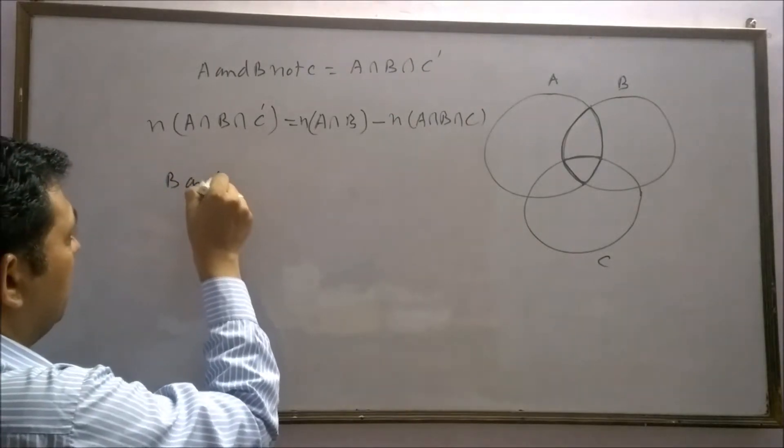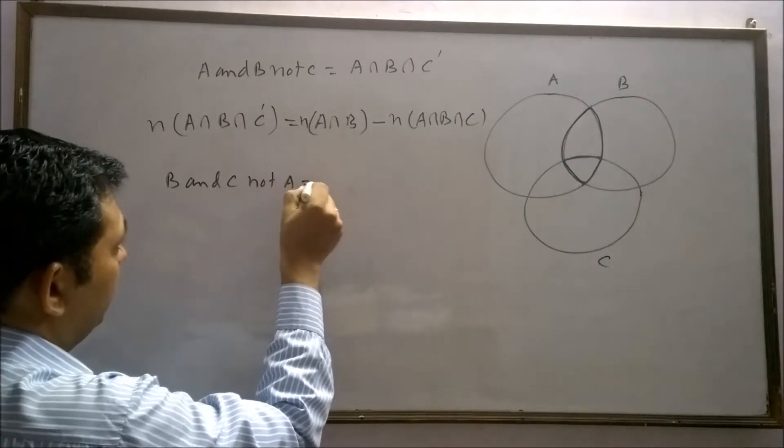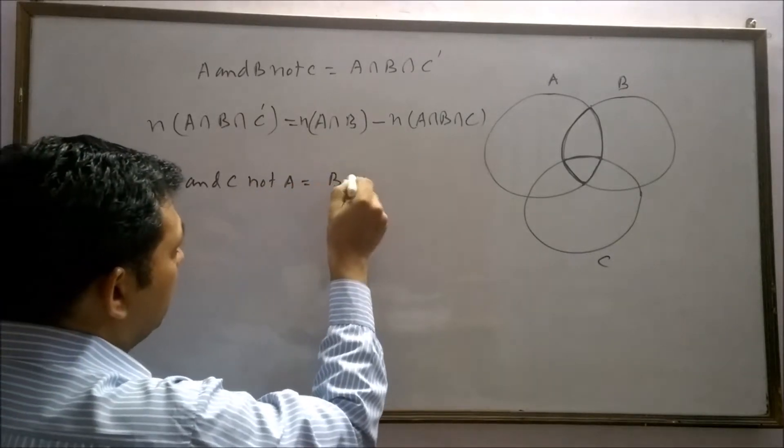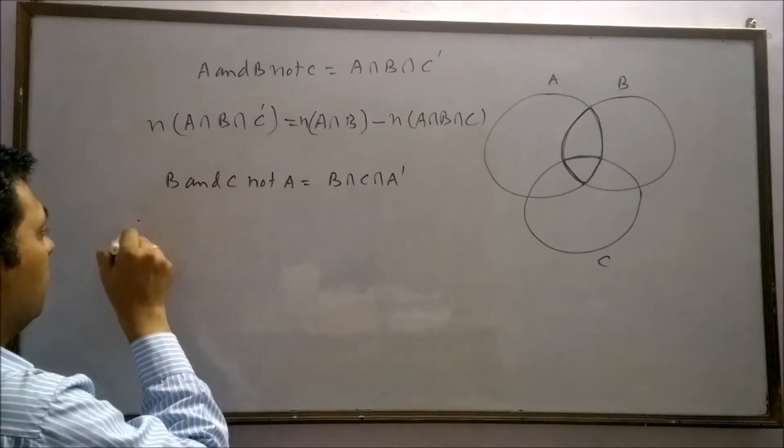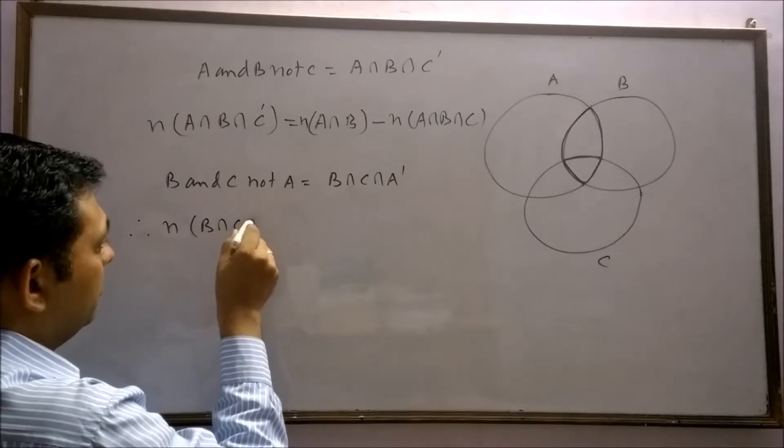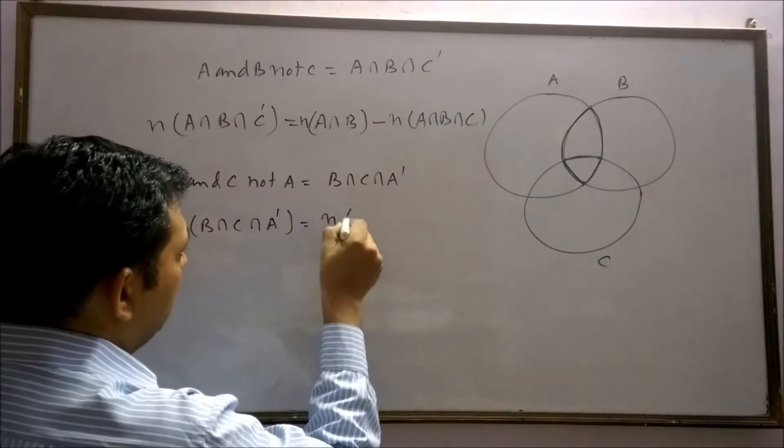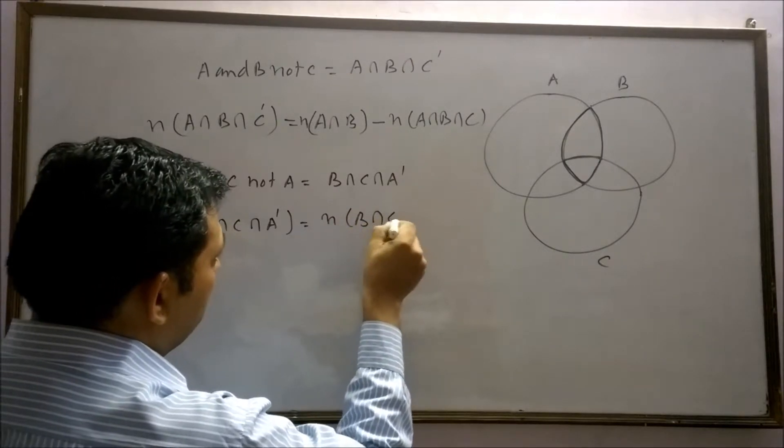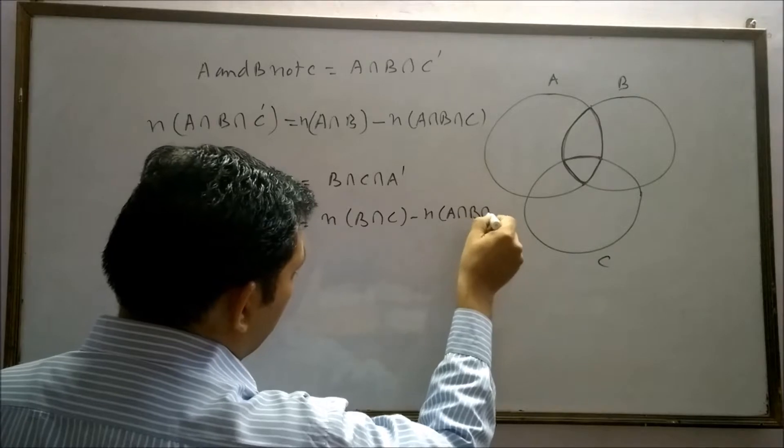B and C but not A will equal to B intersection C intersection A complement. Therefore, n(B∩C∩A') = n(B∩C) - n(A∩B∩C).